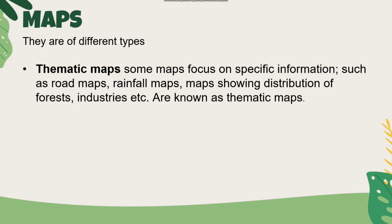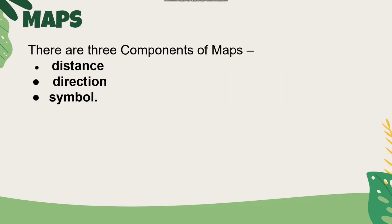This is a thematic map. Thematic maps include road maps, rainfall maps, maps showing distribution of forests, and industries. Forests and industries — this is a thematic map.